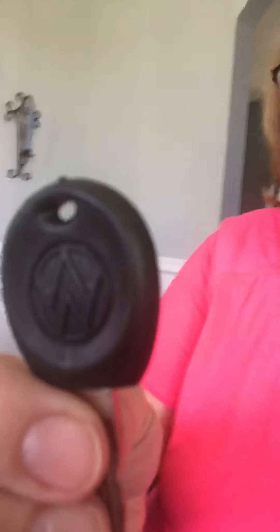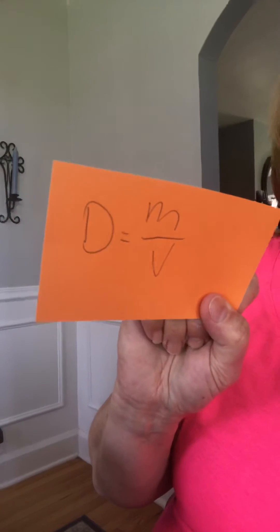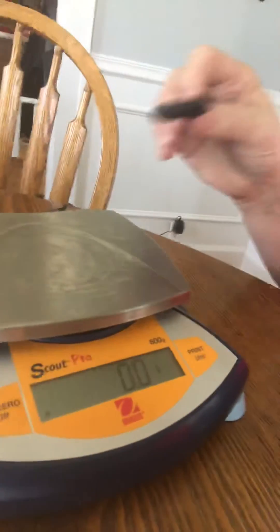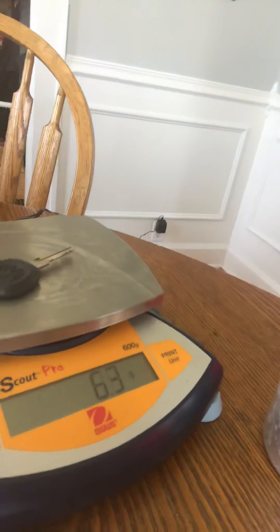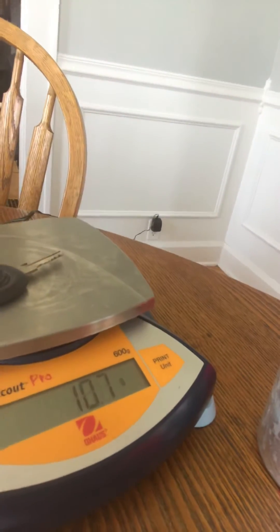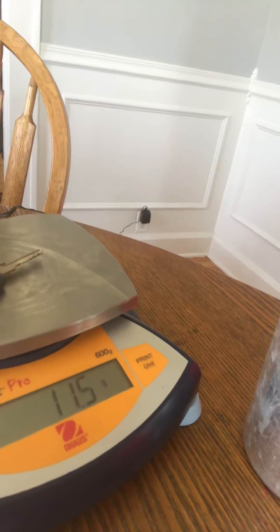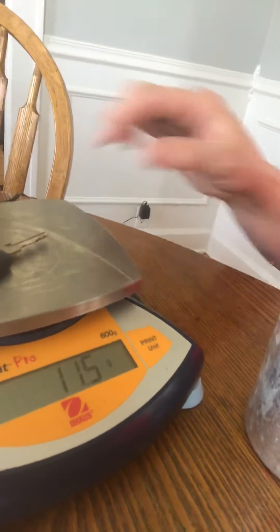So to do so, as you know, we are still going to use mass divided by volume, so we need to find the key's mass. I'll put the key on the balance. The electronic balance is telling us that it's 11.5 grams, so write that down. That's your mass. The next thing we need to find is the volume of it.